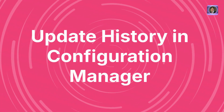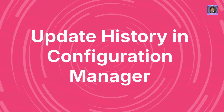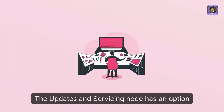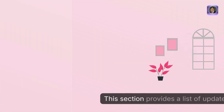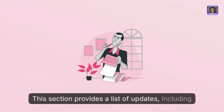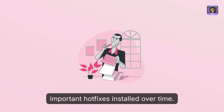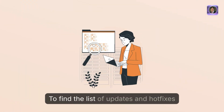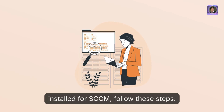Update History in Configuration Manager. The Updates and Servicing node has an option known as History. This section provides a list of updates, including important hotfixes installed over time. To find the list of updates and hotfixes installed for SCCM, follow these steps.